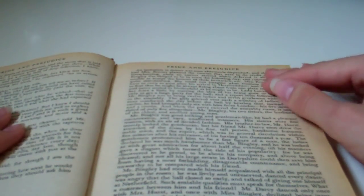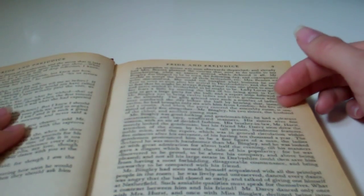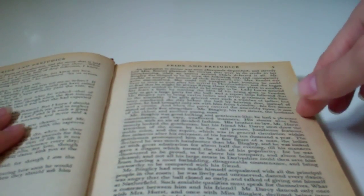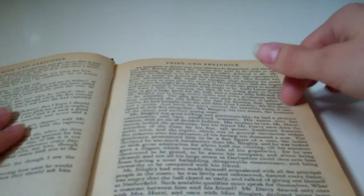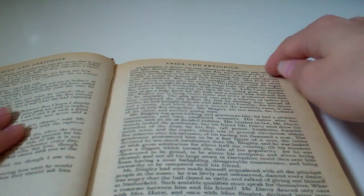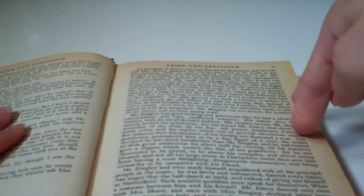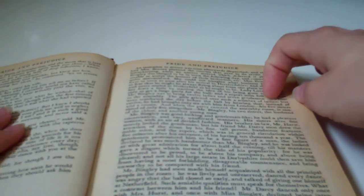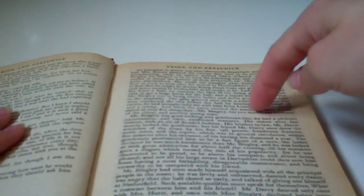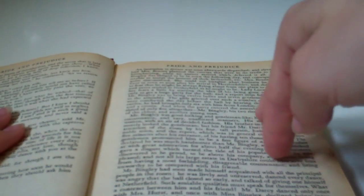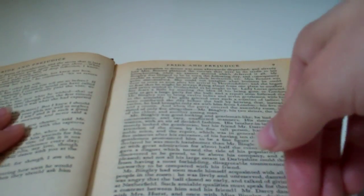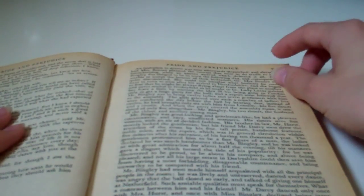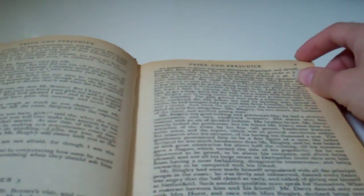Mr. Darcy danced only once with Mrs. Hurst and once with Miss Bingley, declined being introduced to any other lady, and spent the rest of the evening in walking about the room, speaking occasionally to one of his own party. His character was decided. He was the proudest, most disagreeable man in the world, and everybody hoped that he would never come there again. Amongst the most violent against him was Mrs. Bennet, whose dislike of his general behavior was sharpened into particular resentment by his having slighted one of her daughters.